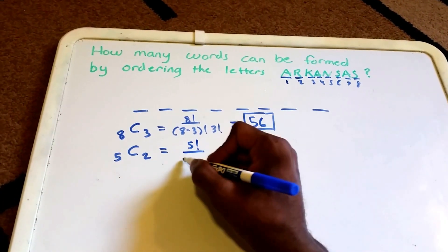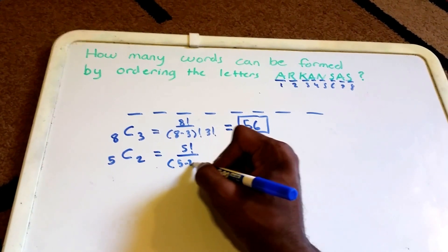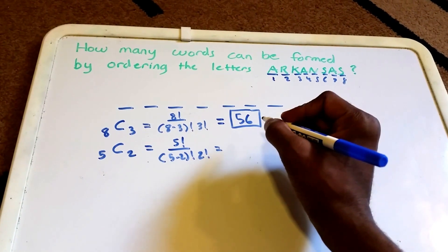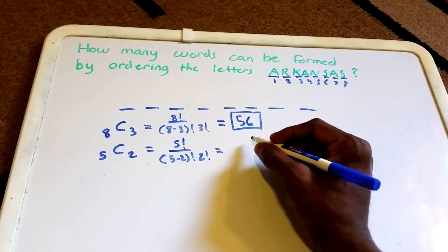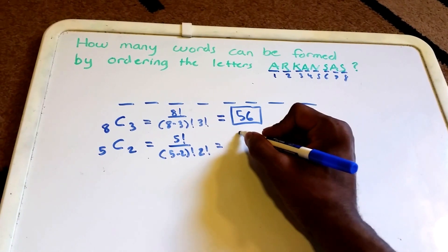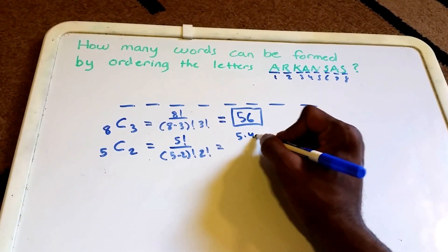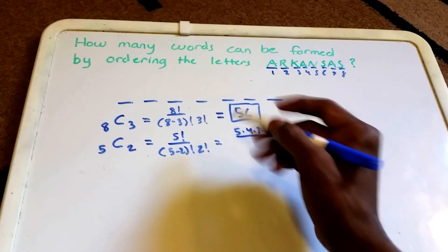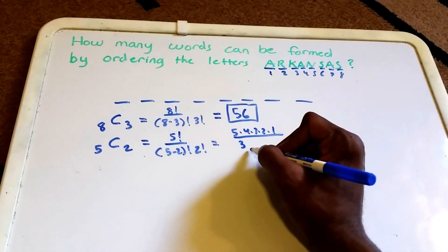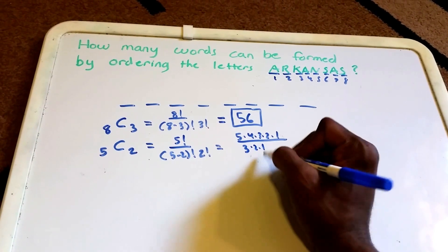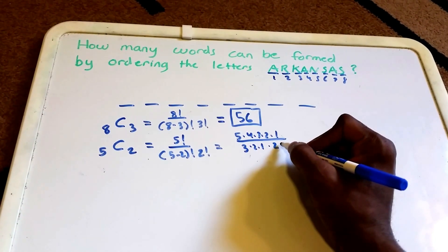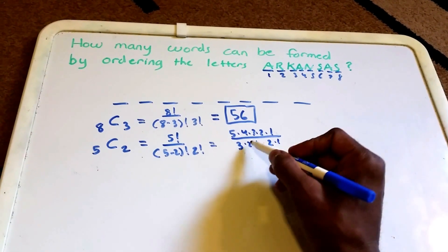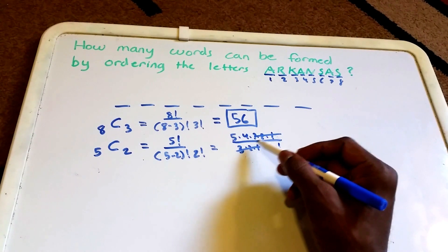That can be written as 5 factorial over 5 minus 2 factorial times 2 factorial, which is equal to, let's see, I'm going to have to write this out a little bit: 5 times 4 times 3 times 2 times 1 over 3 times 2 times 2 times 1.